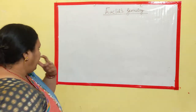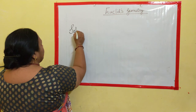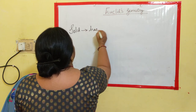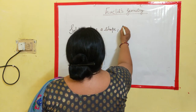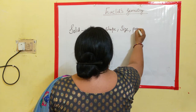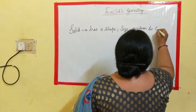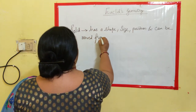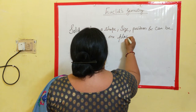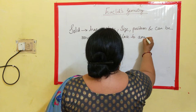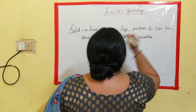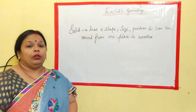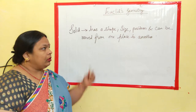What is a solid? We know, we have already learned about what is solid. Solid has a shape, size, position and can be moved from one place to another. Now we know what is solid — solid is nothing but an object.